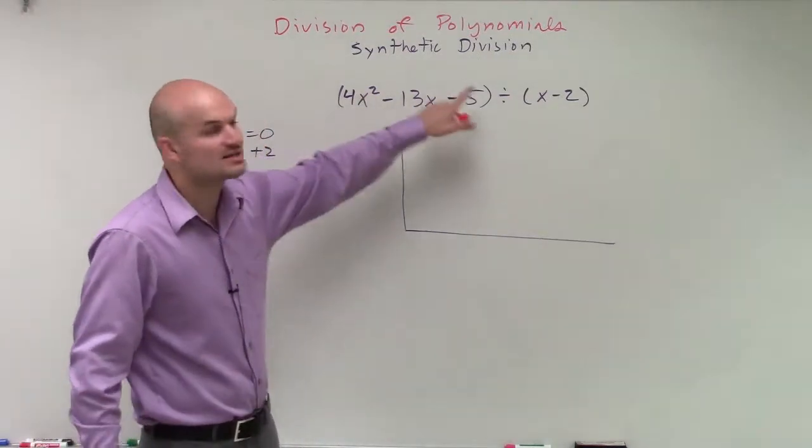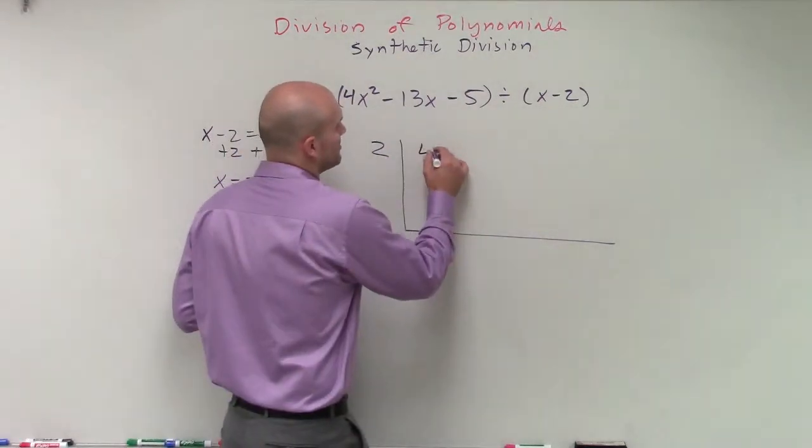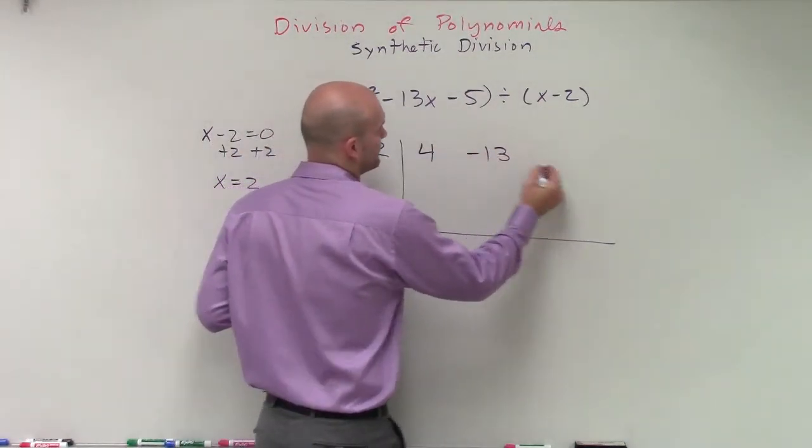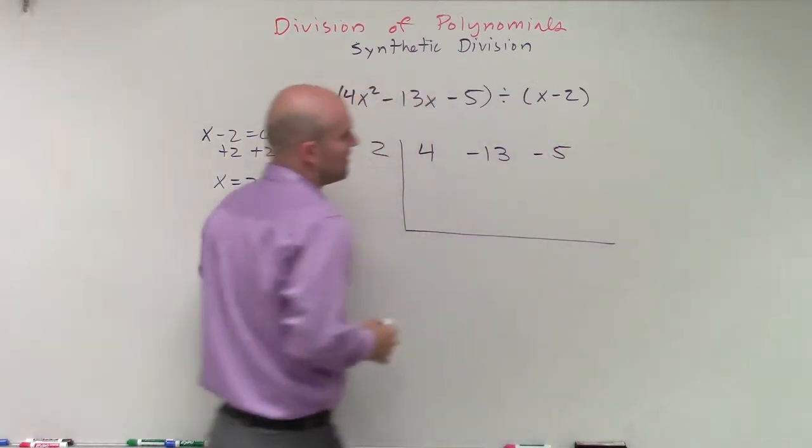In this case, though, we have x squared to x to our constant. So we're not missing any terms. So I'm going to label them 4, negative 13, negative 5.